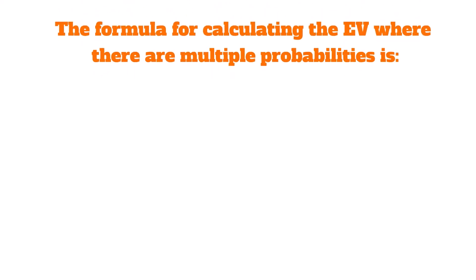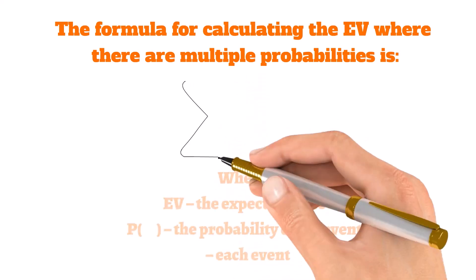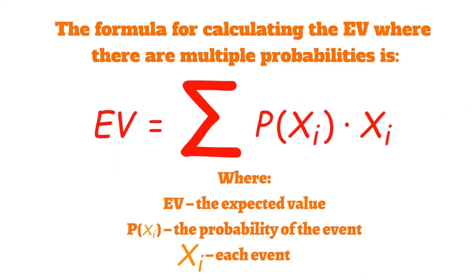The formula for calculating the expected value where there are multiple probabilities is E(X) is equal to the sum of the probability of xi occurring times the gain or loss that we get from the event xi. So here, EV is the expected value, the probability of xi occurring is the probability of the event, and xi represents the loss/gain from each event.